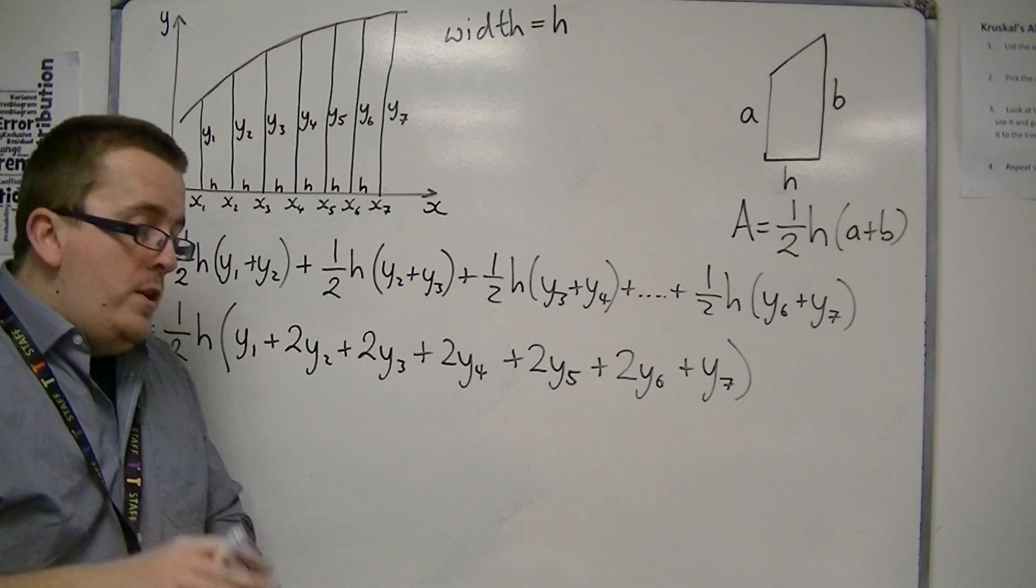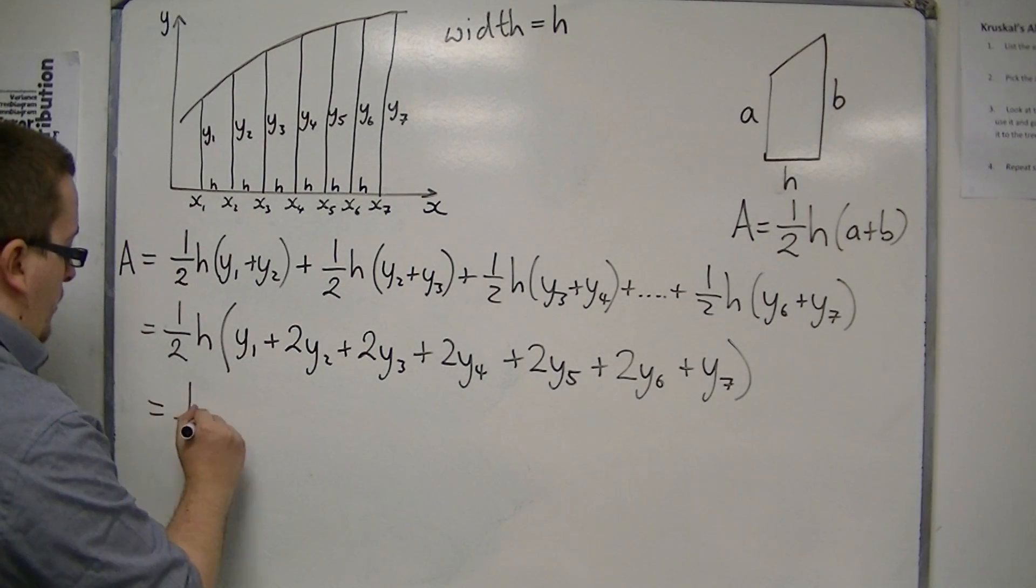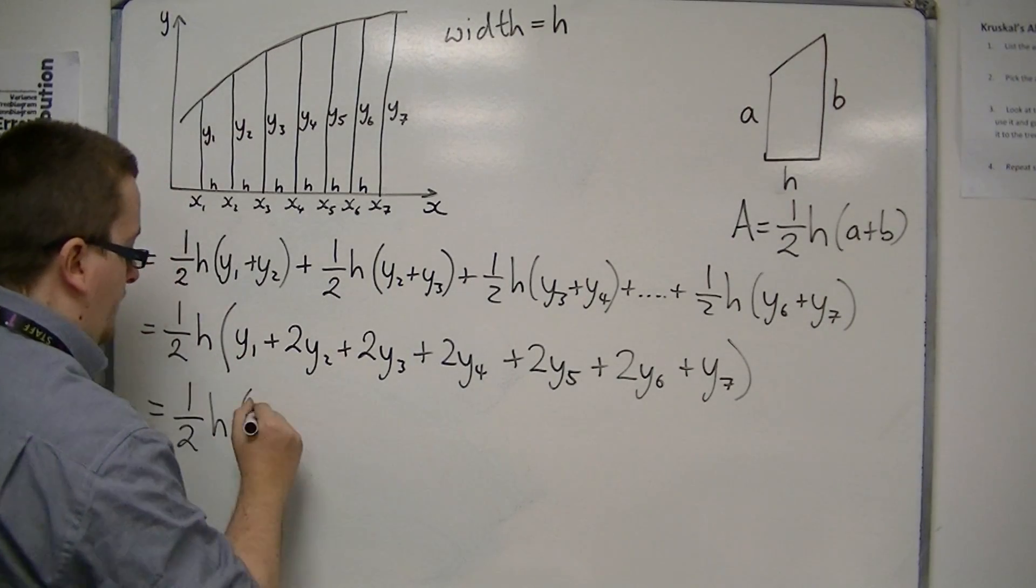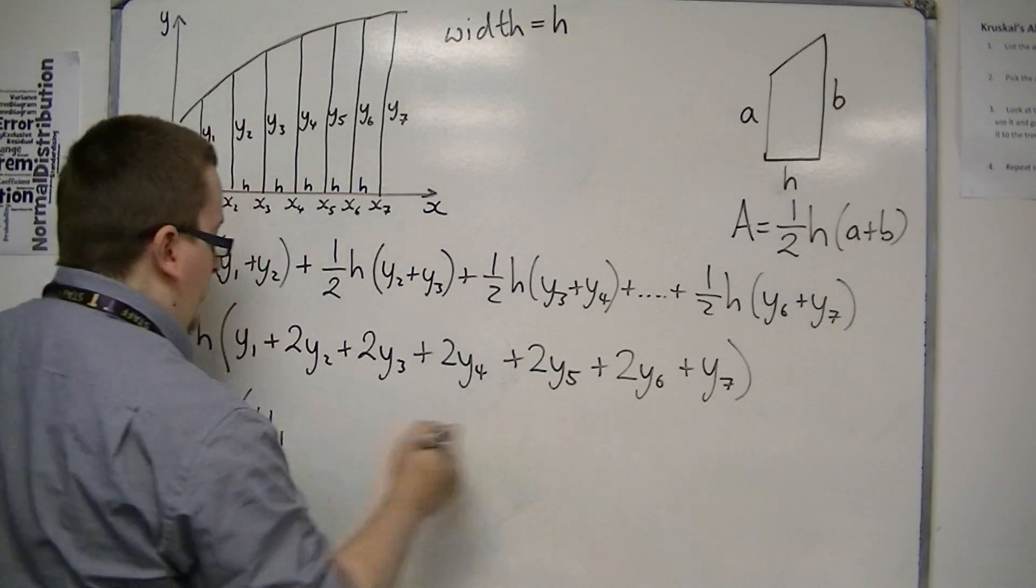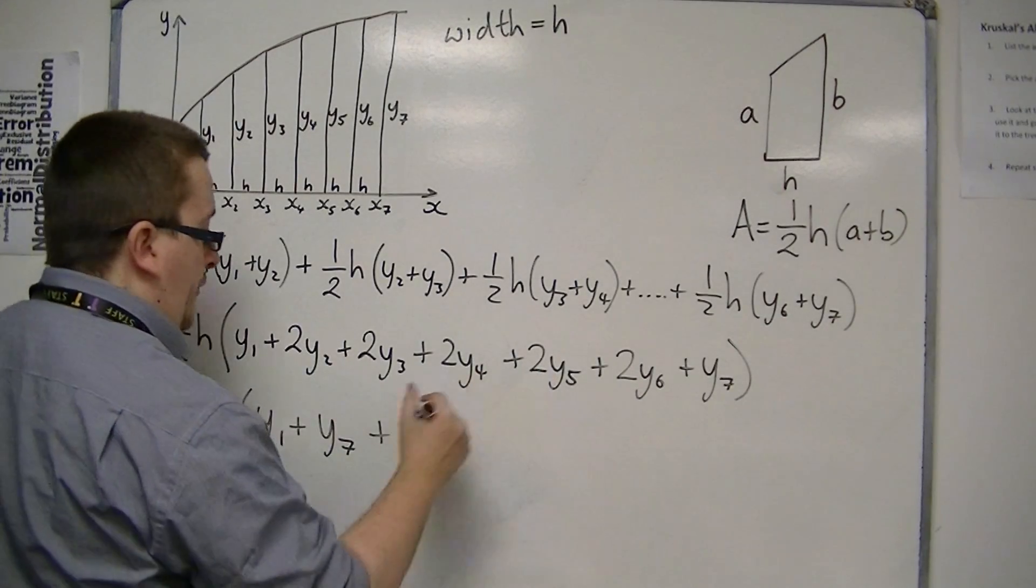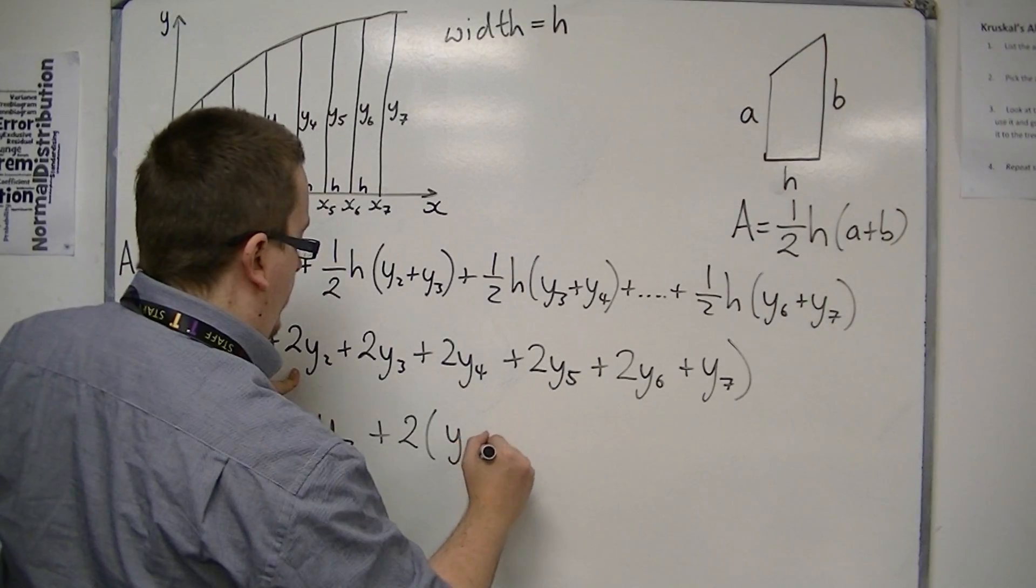So I can reorganize this so that it now looks like I've got one-half h, I've got the first ordinate y1, plus the last y7, plus two lots of all the other y-coordinates.